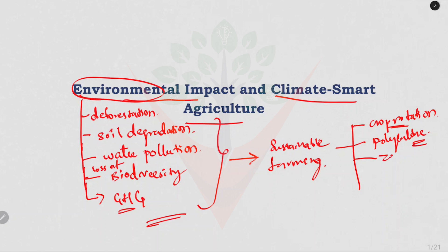Zero tillage means avoiding traditional ploughing, which maintains soil structure, reduces erosion, and promotes carbon sequestration, contributing to climate change mitigation.